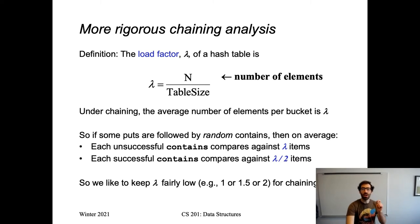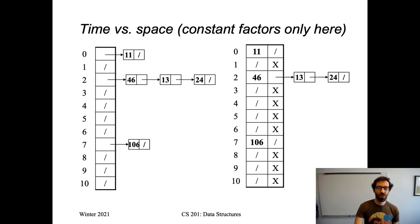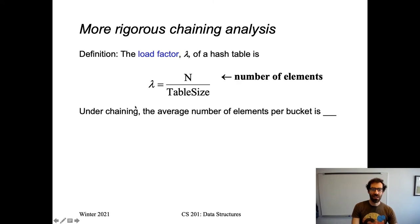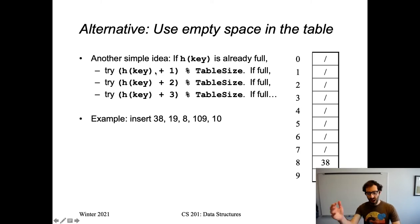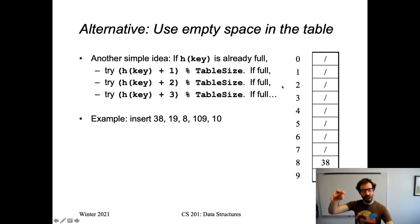Separate chaining is not the only collision resolution strategy. Going back to the picture of separate chaining, we have five elements in the table but a lot of empty space — free real estate we're not using. Maybe we should find some way to use it to store elements that are piling up in linked lists. So if the index we hash to is already full, we just try the next spot, adding one to that index. If that's full, we try the next slot, and the next — all mod table size, which wraps us back to the beginning.